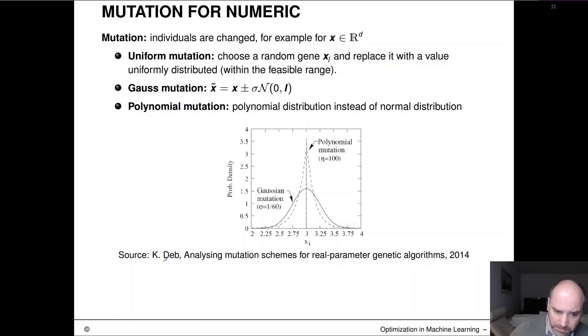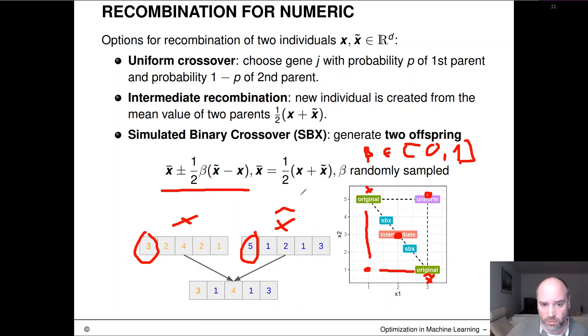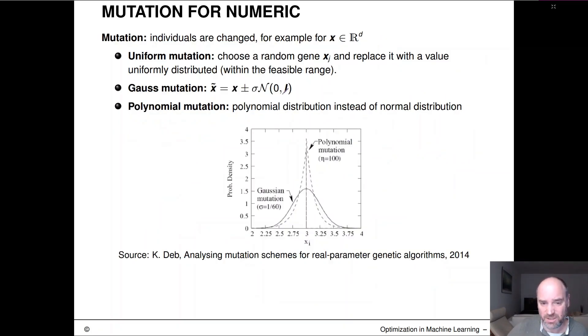And there's a paper by Deb. It's a pretty well-known author from the field that analyzes different mutation schemes for real parameter genetic algorithms and evolutionary strategies, where out of the theoretical and empirical analysis, they can show quite well that such peaked distributions here perform a bit better than the normal Gaussian mutation operations. So in modern evolutionary strategies, very often, the simulated binary crossover here is used together with this polynomial mutation.